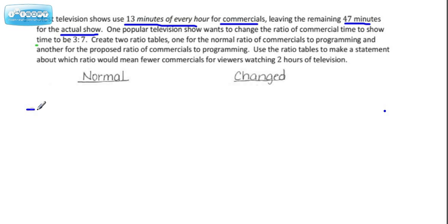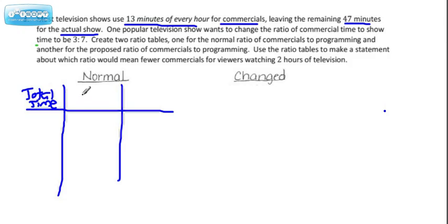When we make our t-table, let's make a double t-table so we can include all that information. So we have total time, and I apologize that it's a little difficult to write with a mouse with this marker, but I'll do the best I can. We have the commercial time, and then we have the actual show, show time we'll call that.